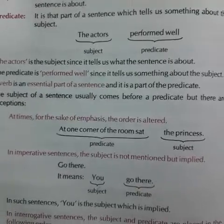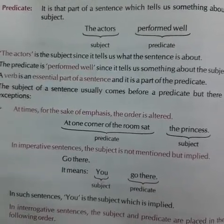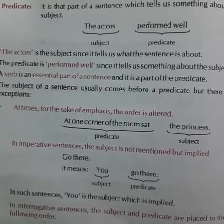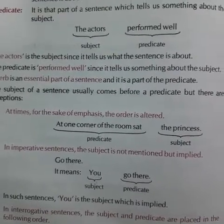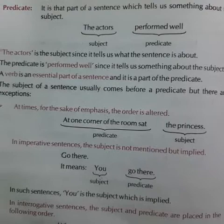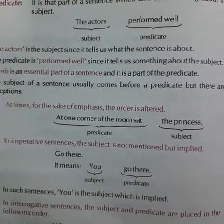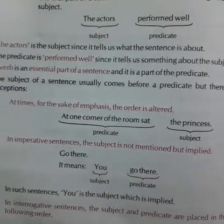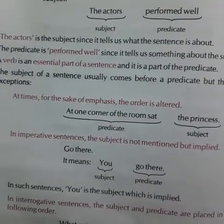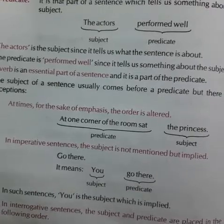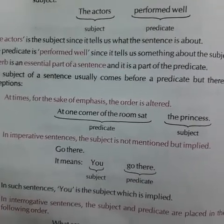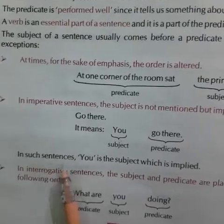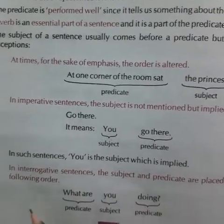For example, if I say 'Shut the door,' then whom am I commanding? Obviously, whoever is in front of me — so 'you' will be the subject. In imperative sentences, our subject is 'you.' You is the subject and the rest is the predicate. In short, we can say the complete imperative sentence is the predicate itself, and 'you' will be considered as the subject. In such sentences, 'you' is the subject which is implied.